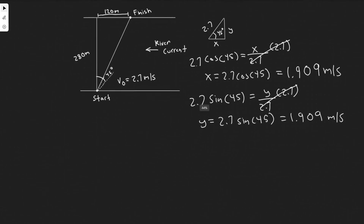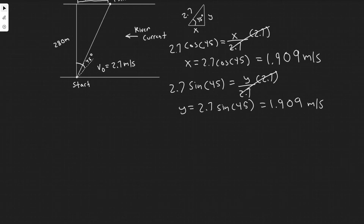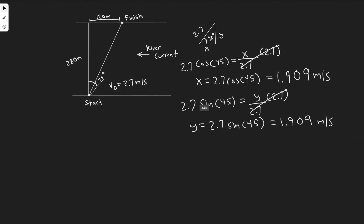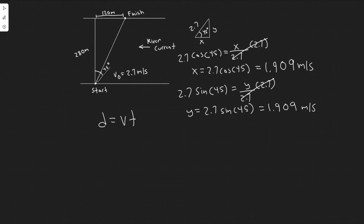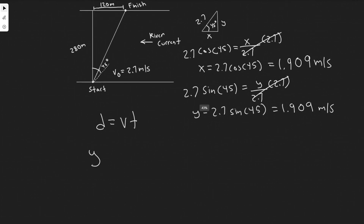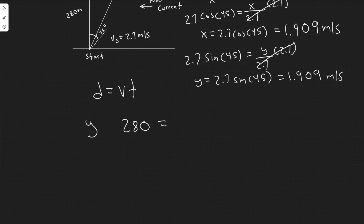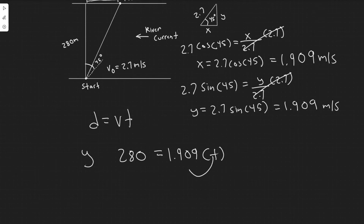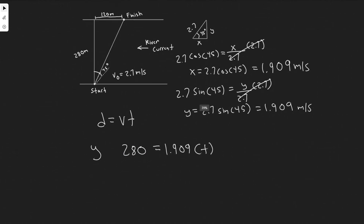Now here's how we actually solve the problem. We create two equations — one for traveling in x and one for y — based on distance = velocity × time. It's easier to start with y. The distance in y is 280 meters, and the velocity in y is 1.909 m/s, so: 280 = 1.909 × t. This lets us find the time.